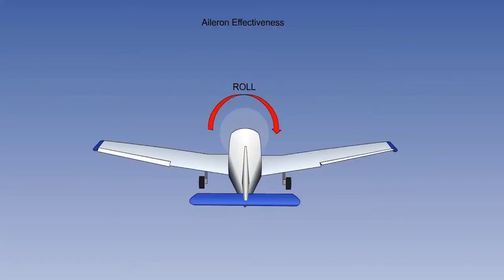At low airspeeds, and therefore low dynamic pressures, the effectiveness of all flying controls for a given displacement is reduced. This effect on the rudder has already been mentioned, but the ailerons are similarly affected, of course.